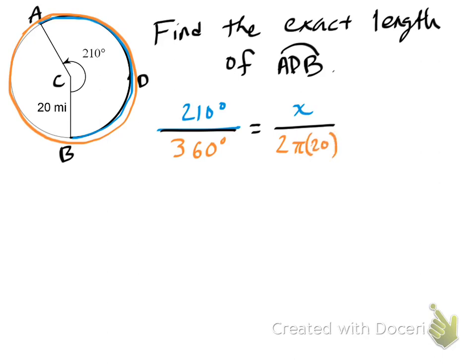So the blues both describe the arc ADB, first in degrees right here, and then in length terms. The orange describes the full circle, first in degrees, and then in terms of length, better known as circumference.